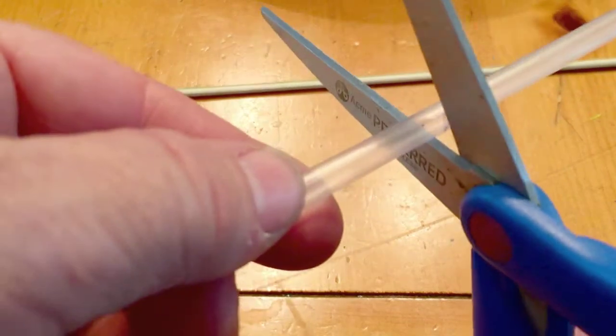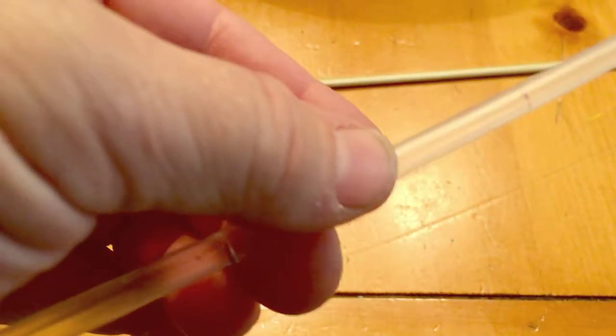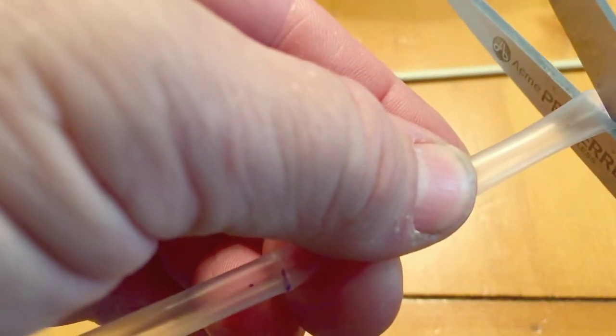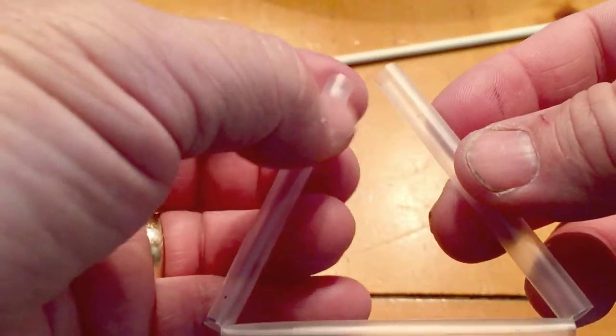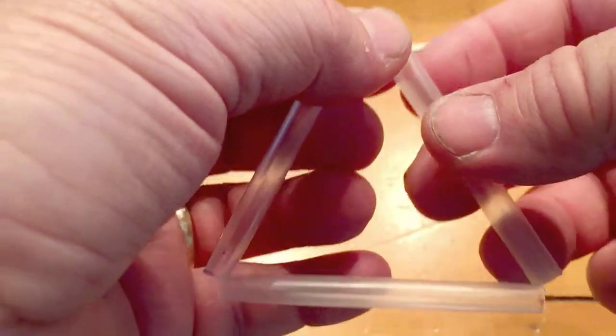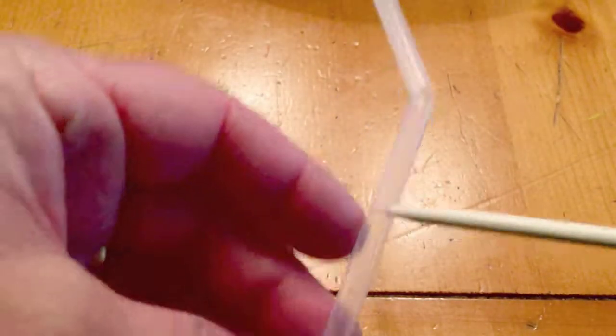You're going to take a straw and mark it off to a third of the way, and then cut halfway through the straw on both cuts so it'll end up being a triangle. You have to measure it so it's a third of the way. Every straw is a little bit different so I can't give any measurement on that.